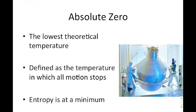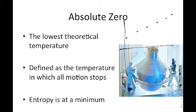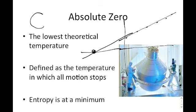Absolute zero is the lowest theoretical temperature that is possible. It is defined as the temperature at which all motion stops and entropy is at a minimum. We've never actually reached absolute zero — we've extrapolated experimental data out to a temperature of around minus 273 degrees Celsius, which turns out to be zero degrees Kelvin.